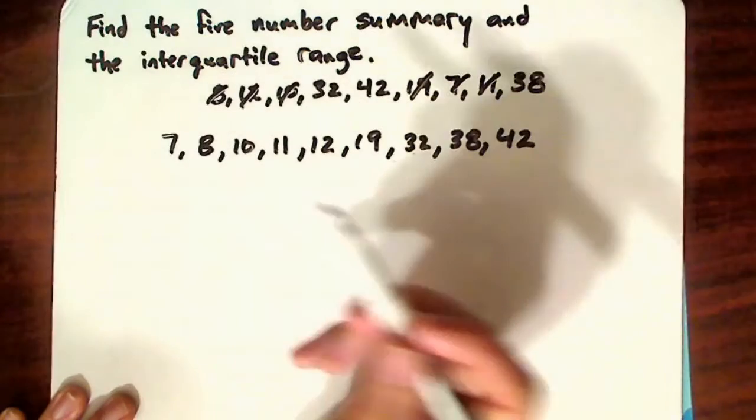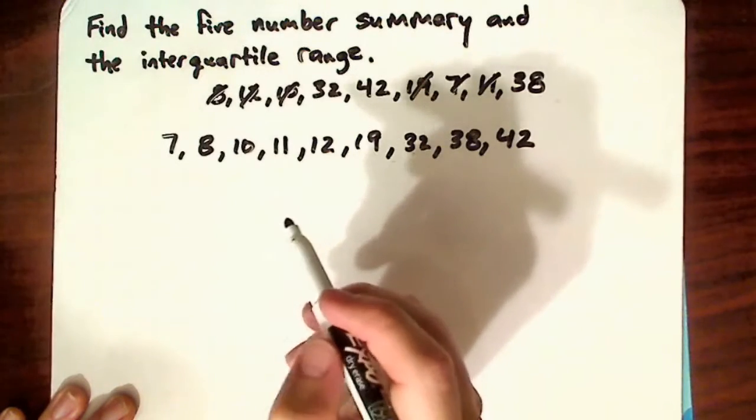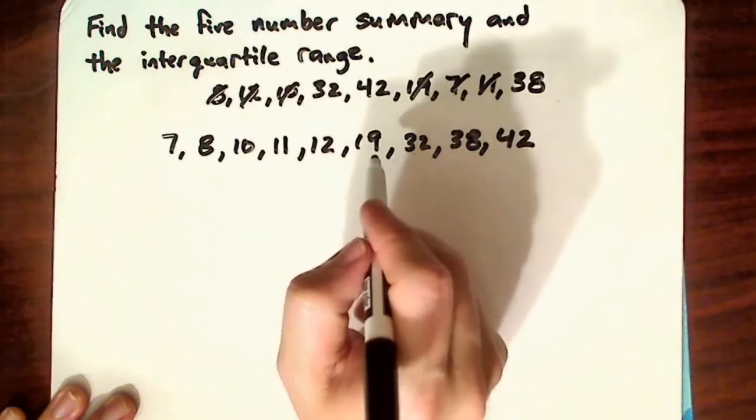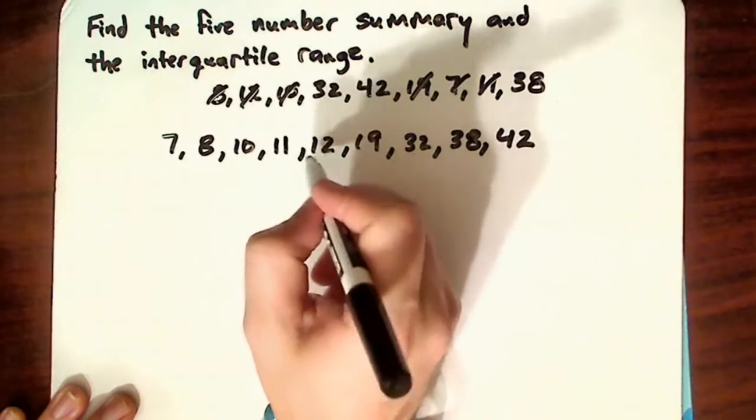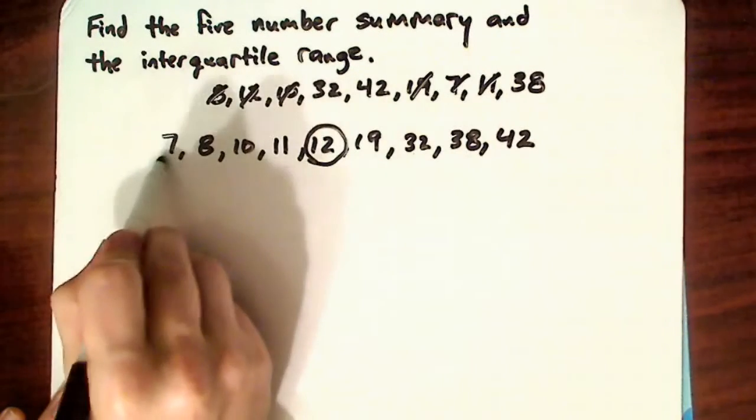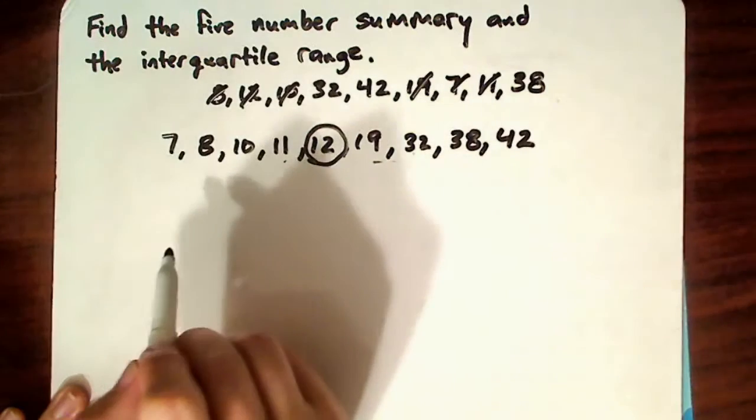Now, to find the five-number summary, you really don't need to do any calculations because the second quartile, which is the median, is the middle number. And the middle number here, since it's 9 numbers, you're going to have 4 on one side, 4 on the other side. So the fifth number is the middle number.